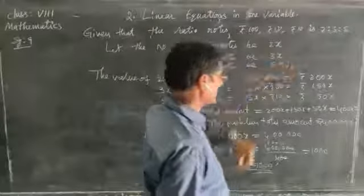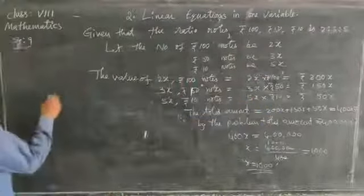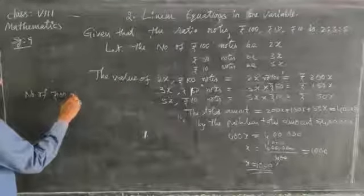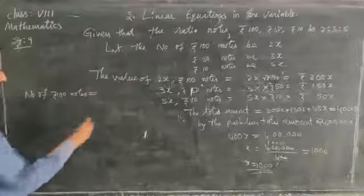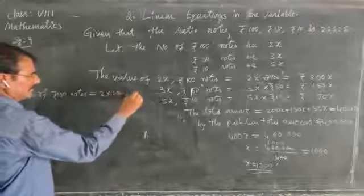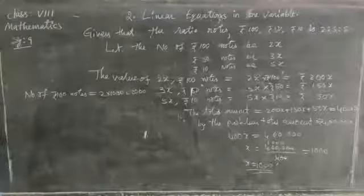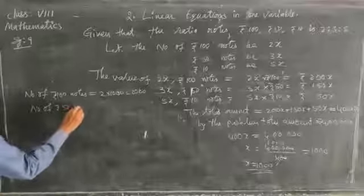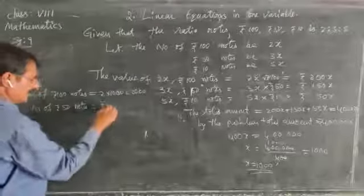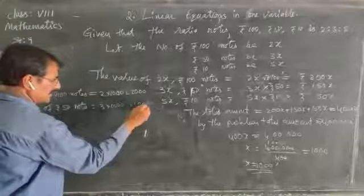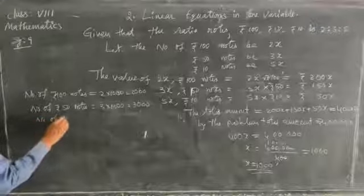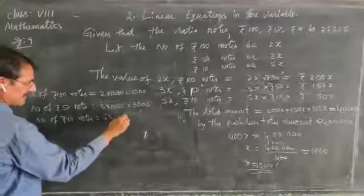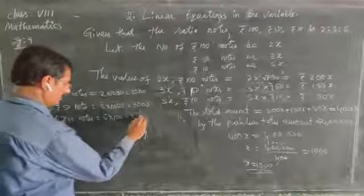How many 100 rupee notes? 2x — x equals 1000 — so number of 100 rupee notes equals 2000. Number of 50 rupee notes: 3x equals 3 into 1000 equals 3000 notes. Number of 10 rupee notes: 5x equals 5 into 1000 equals 5000 notes.